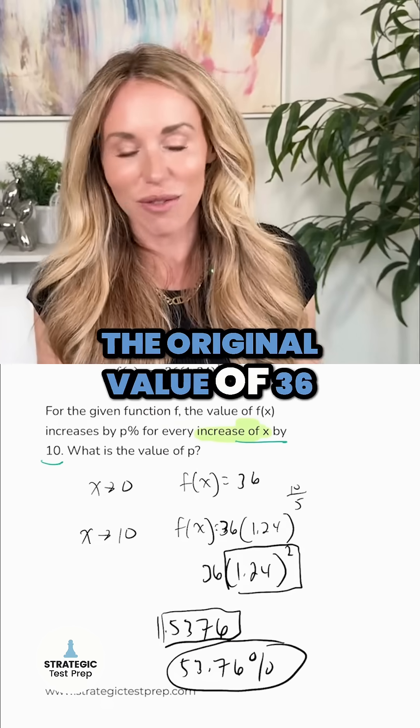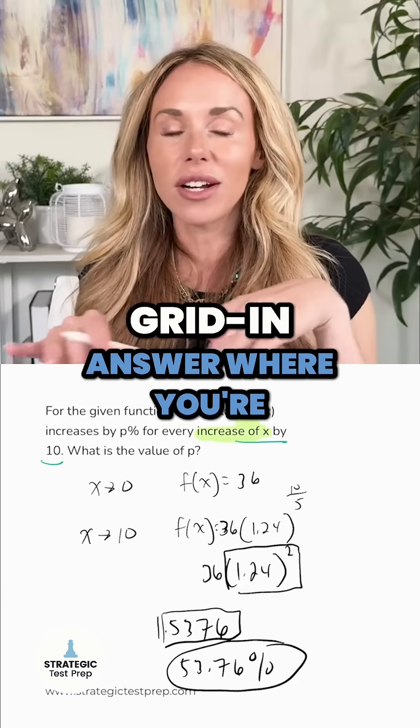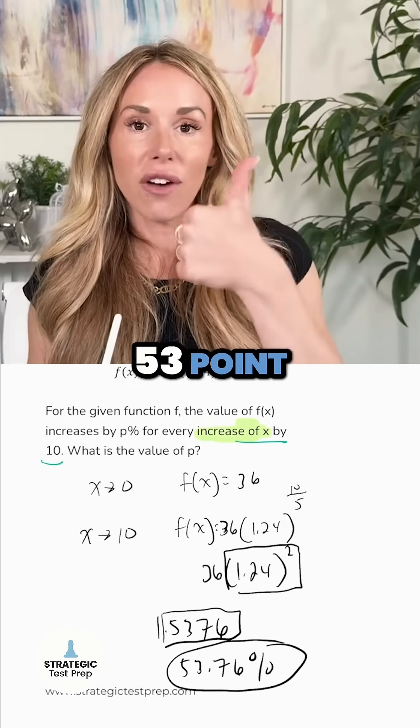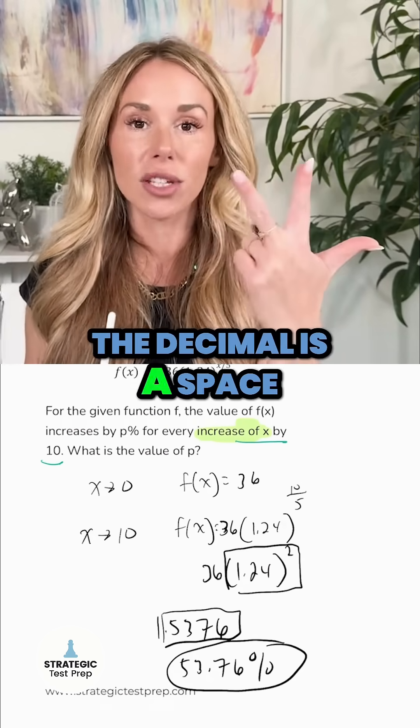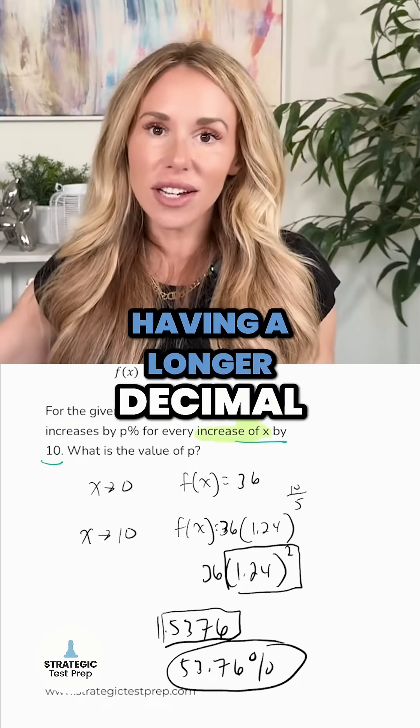So there you have it. Now you can fit all five of those digits. If this is a grid-in answer where you're typing in your response, you have five spaces, so you can fit 53 point, the decimal's a space, seven six, exactly five.